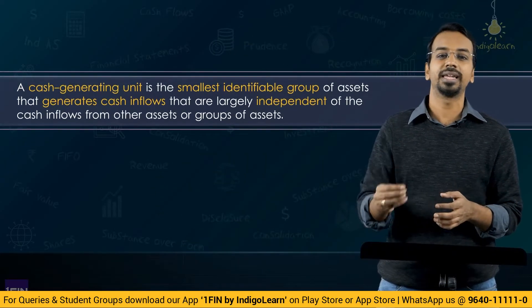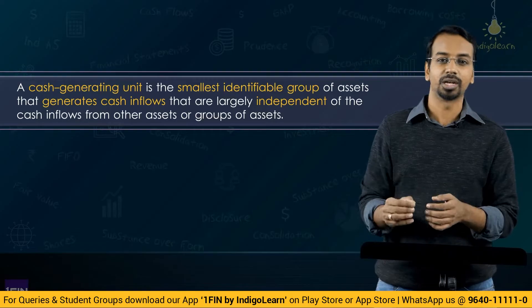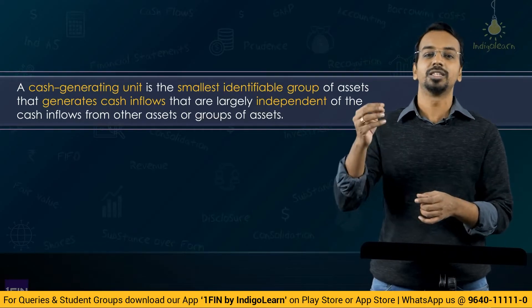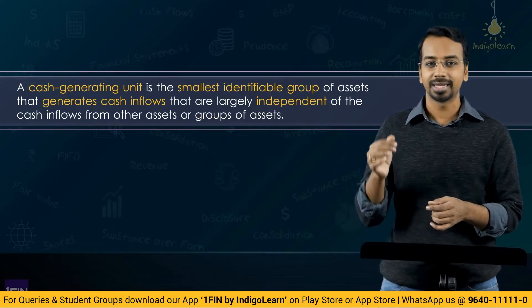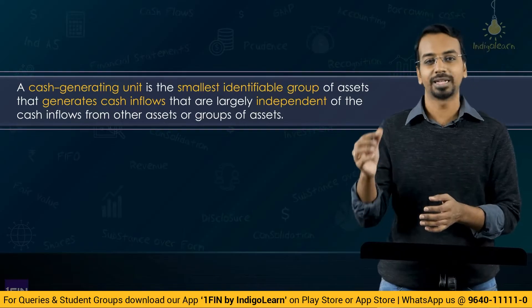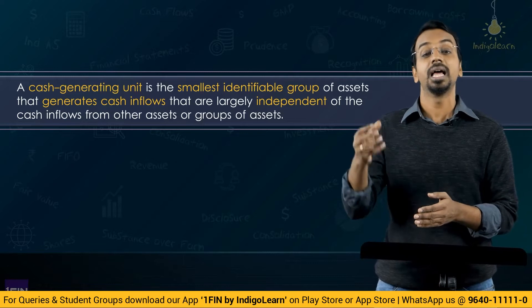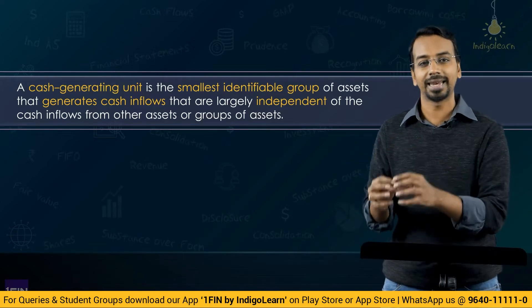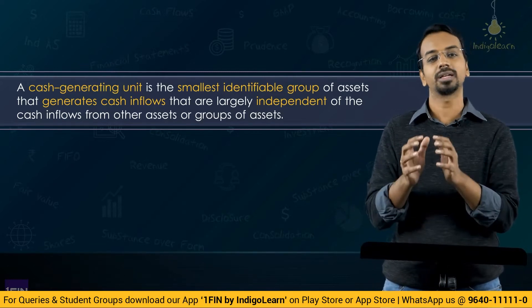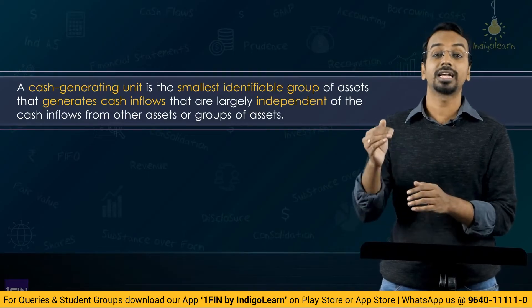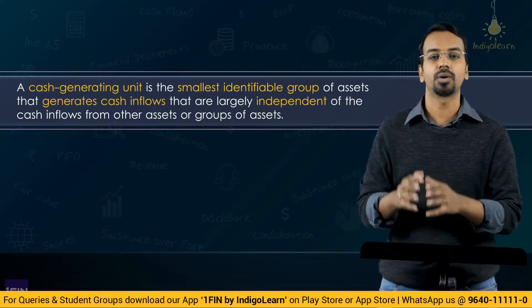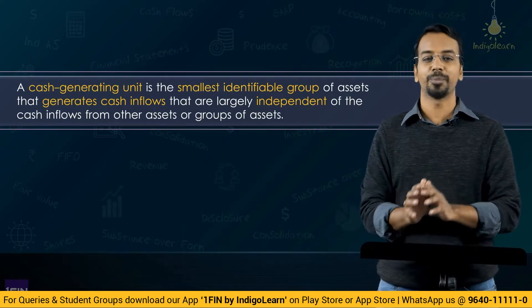There are some assets which do not generate cash flows largely independent of other assets. In such situations, we will group assets and create something called a cash generating unit. Even for a cash generating unit, the principles of impairment testing are the same — we estimate the recoverable amount, which is higher of value in use and fair value less cost of disposal, and compare that with the carrying amount of the CGU. If the recoverable amount is less than the carrying amount, it will be recognized as an impairment loss.